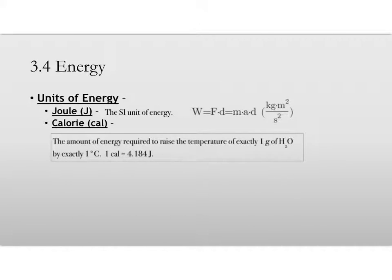Units of energy are joules or calories. Joule has the symbol capital J, and calories have the C-A-L there. Joule is the SI unit of energy. And it's gotten from the equation I have here. Work equals force times distance.